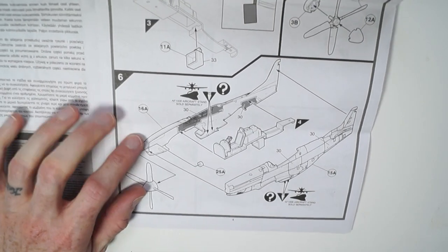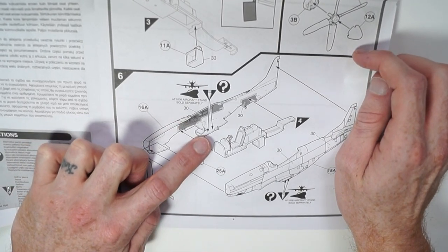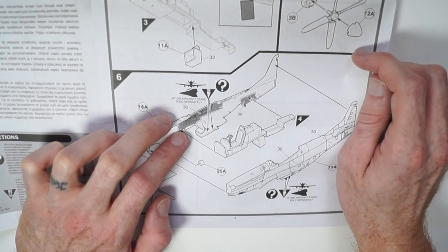Step five, assembly of the spinner and prop. Step six, adding the cockpit section and prop to the fuselage and then sealing that up. It does indicate to open out two holes on the bottom, that's to add the aircraft stand if you wanted to. That's optional there.